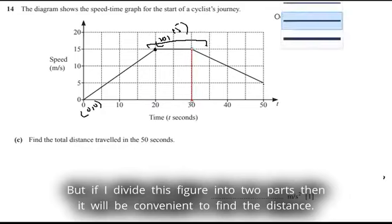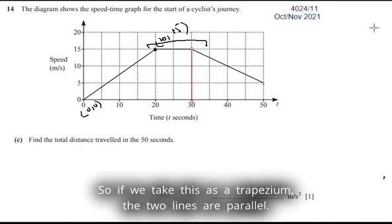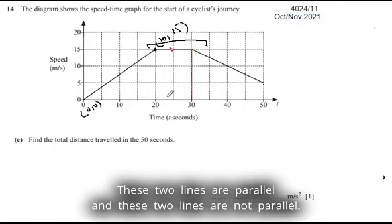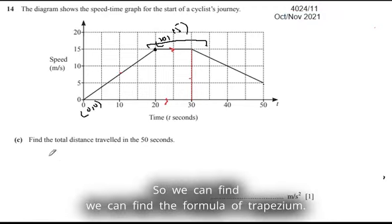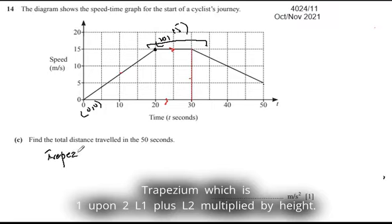If we take this as a trapezium, the two lines are parallel and these two lines are not parallel. So we can apply the formula of trapezium, which is one upon two, l1 plus l2, multiplied by height.